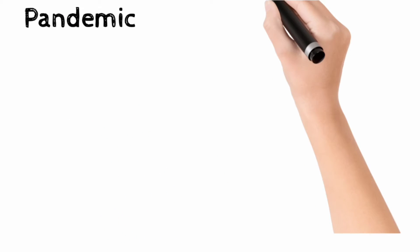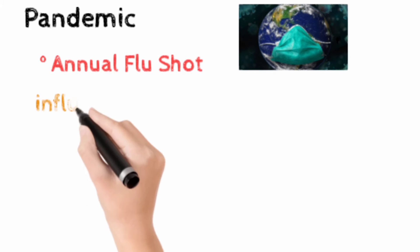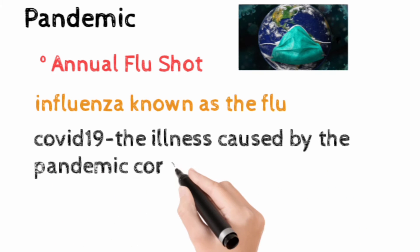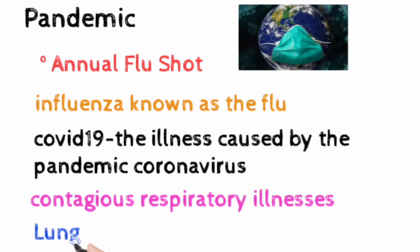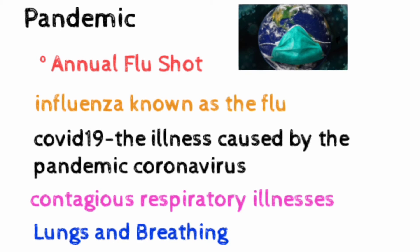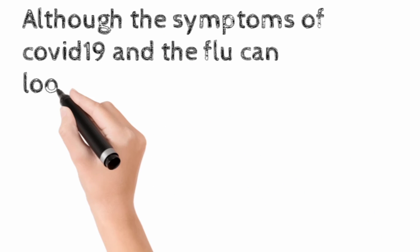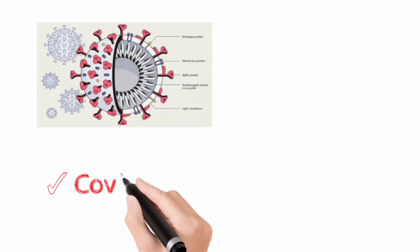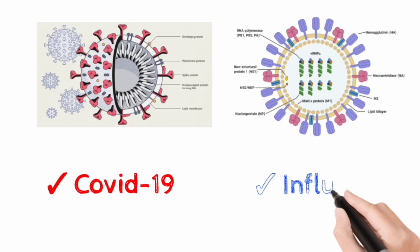In the midst of a pandemic, it may be easy to forget about the importance of getting your annual flu shot. Influenza, known as flu, and COVID-19, the illness caused by the pandemic coronavirus, are both contagious respiratory illnesses, which means they both affect your lungs and breathing. Although the symptoms of COVID-19 and flu can look similar, the two illnesses are caused by different viruses.